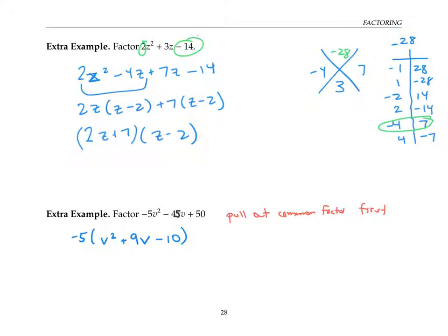Now I can start my x and factor by grouping, or I can use kind of a shortcut method, which you may have seen before. So I can just put these here. And then I know that whatever numbers go here, they're going to have to multiply to the negative 10 and they're going to have to add to the nine. So that would be plus 10 and a minus one will do the trick.